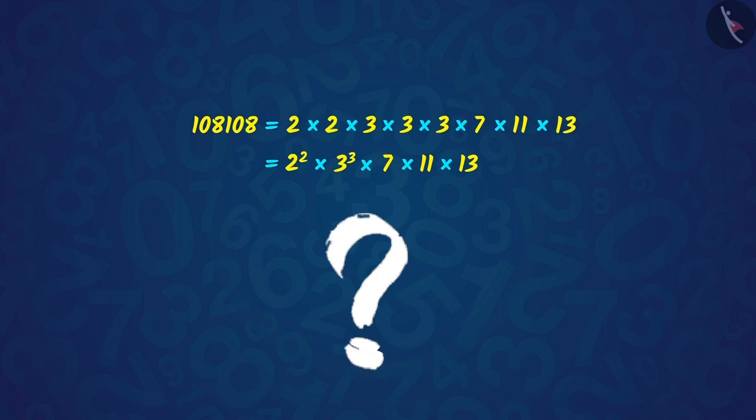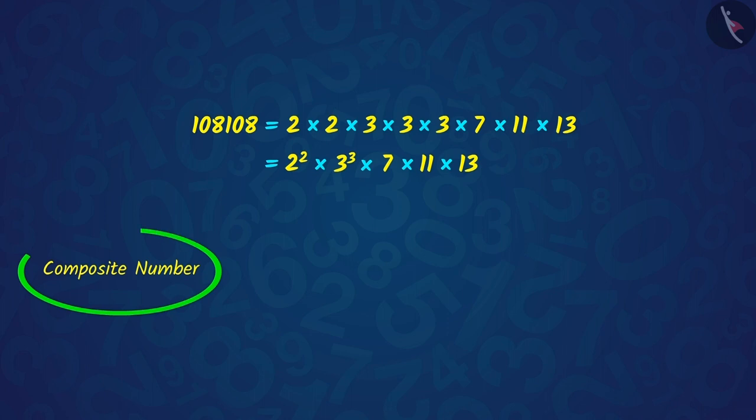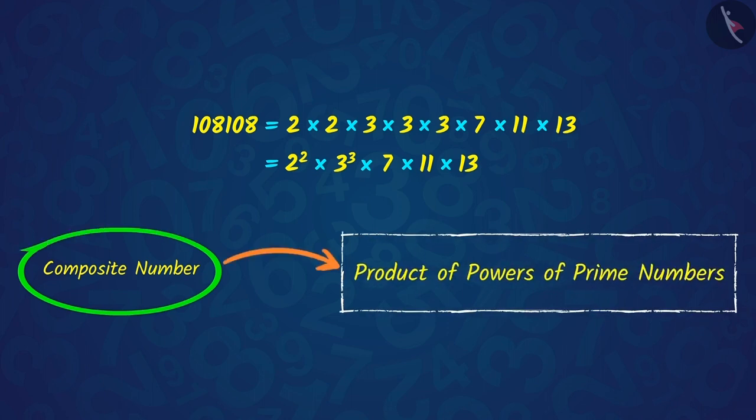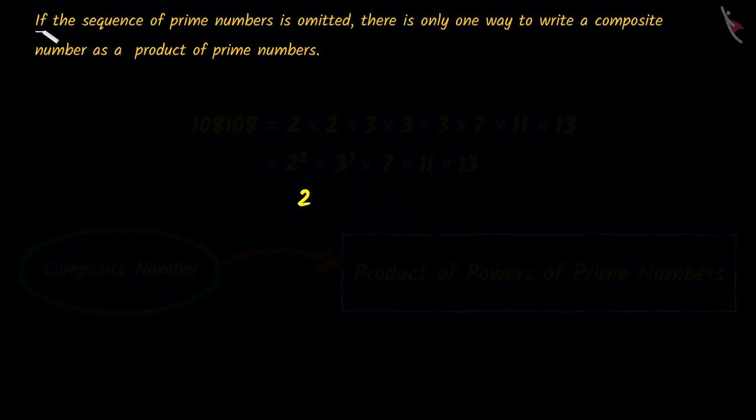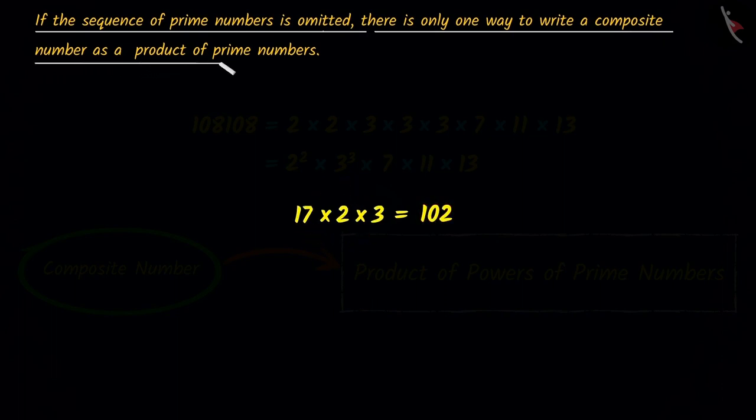What do you understand from this? From this we understand that every composite number can be written as the product of the powers of prime numbers. And, if the sequence of prime numbers is not taken into consideration, then composite number can be written in the same method as the powers of the prime number.